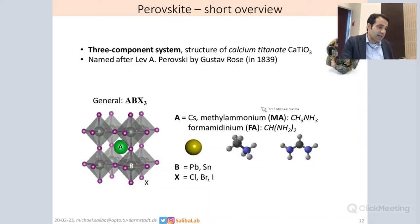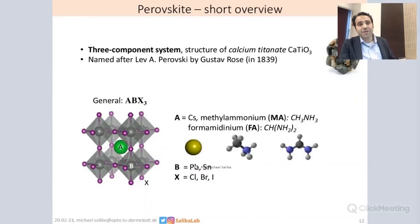In our special case, the A — it's a cation — is either cesium, the small molecule methylammonium, or formamidinium. The B is a metal: it's lead or tin. And the X is a halide: it's chlorine, bromine, or iodine.